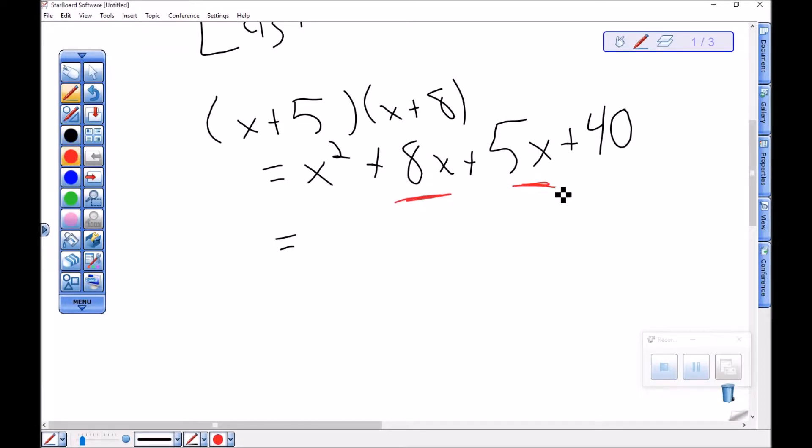Notice that this and this are like terms. So this is really x squared plus 8x plus 5x is plus 13x plus 40.